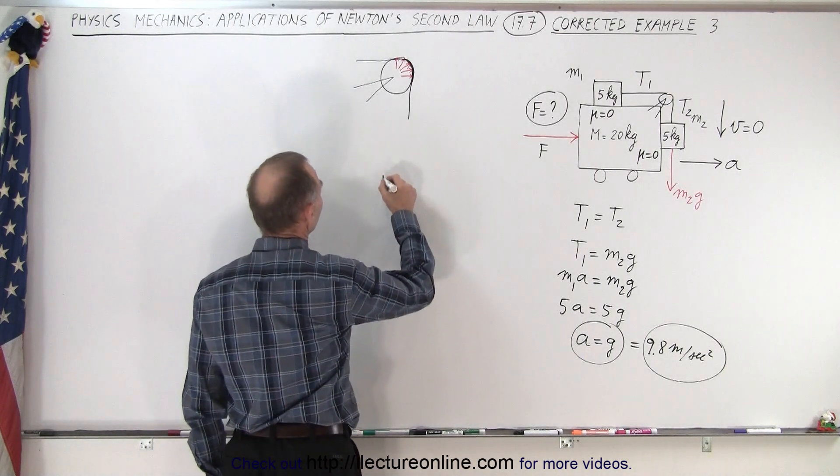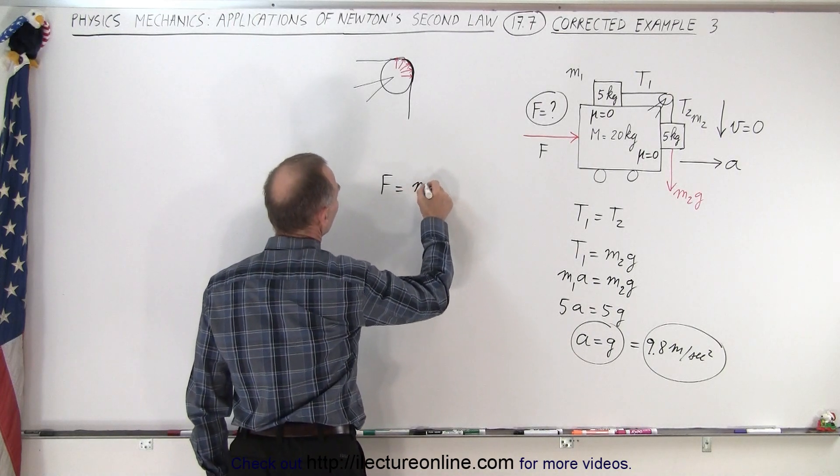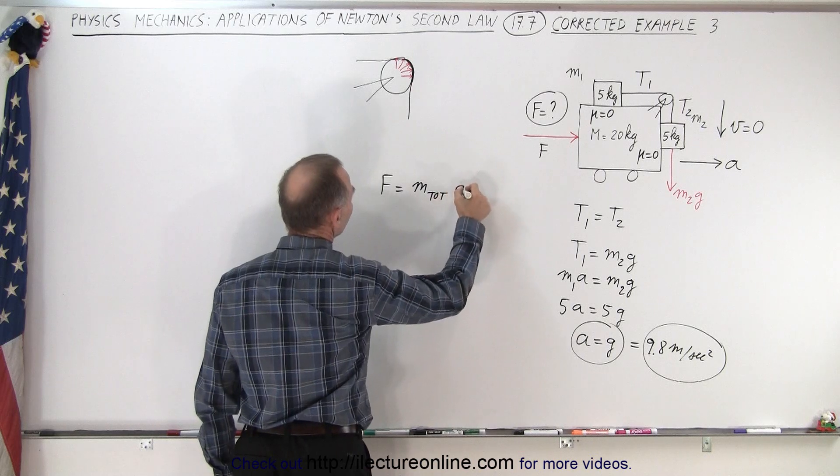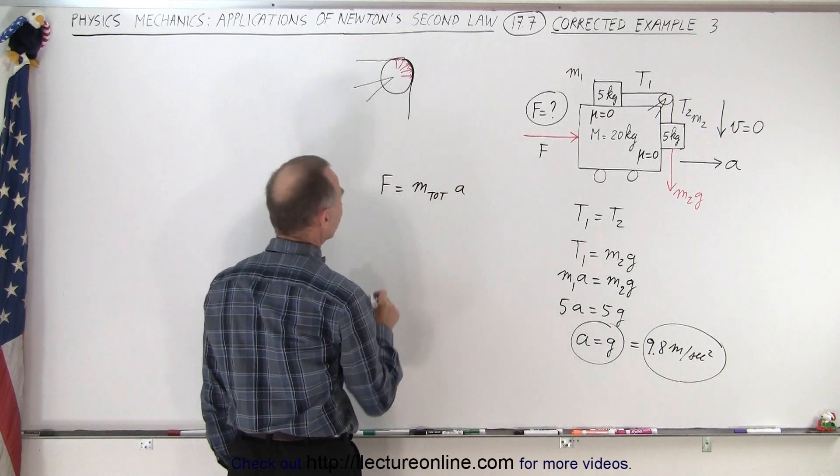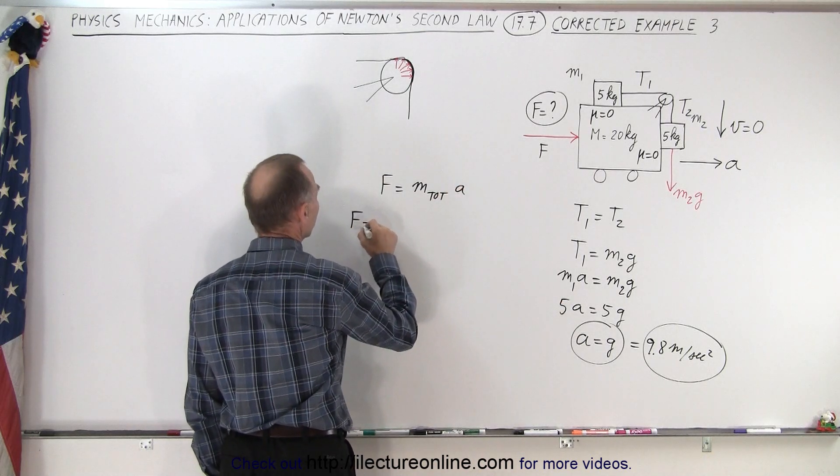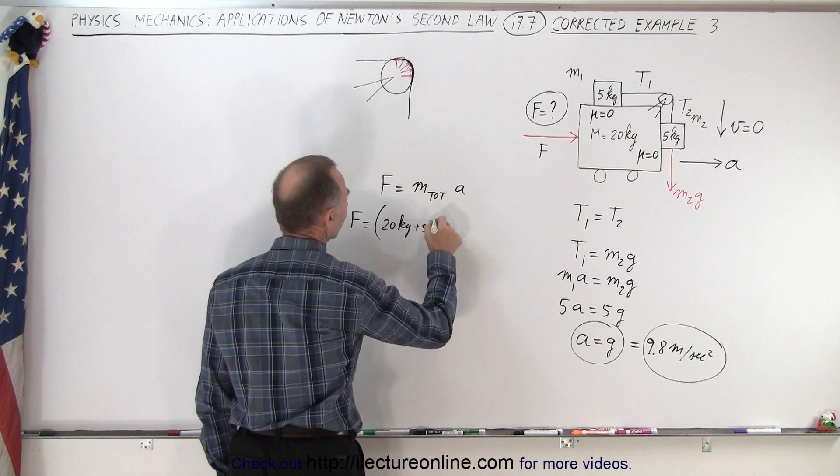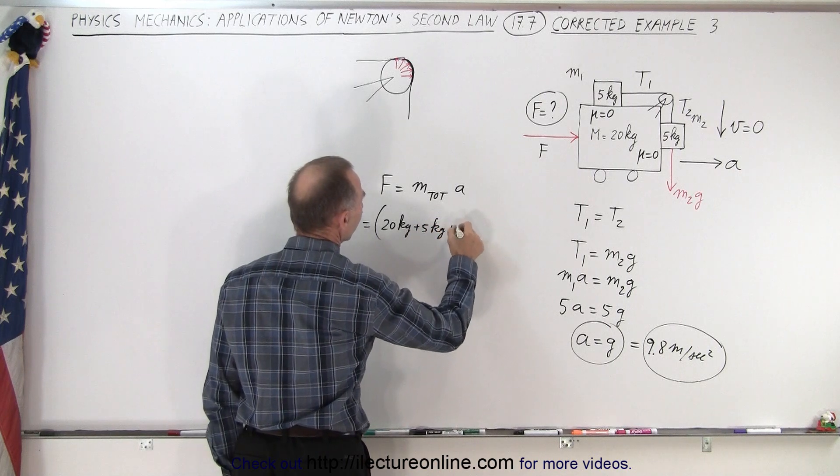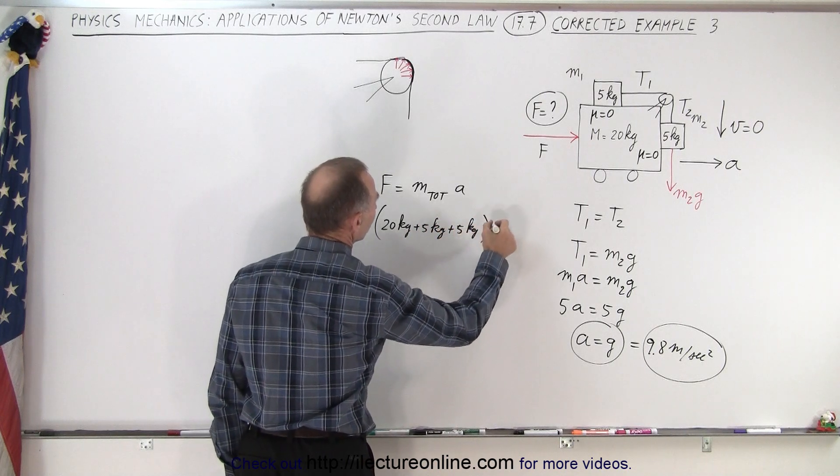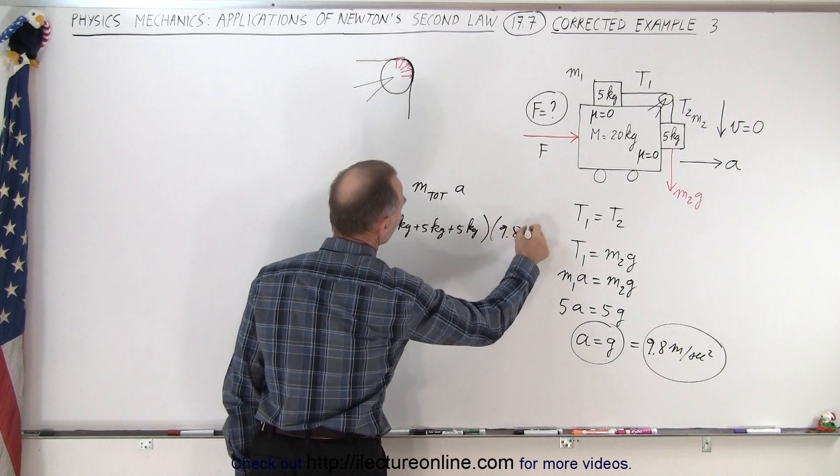And then we can say that F is equal to M total times acceleration, which is 9.8 meters per second squared. So the force required is equal to the 20 kilograms plus the 5 kilograms plus the 5 kilograms, all times 9.8 meters per second squared.